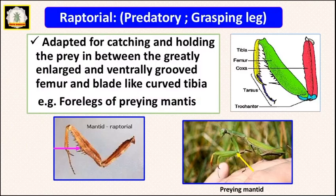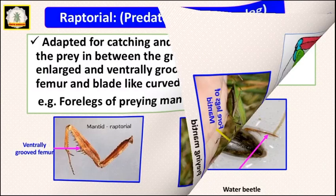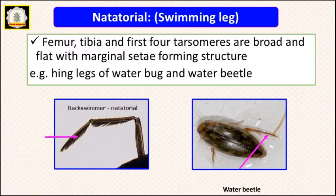Next is raptorial or predatory or grasping legs. In this type, the femur is long with grooves ventrally and is enlarged, whereas the tibia is curved and blade-like. For example, in praying mantis, the forelegs are used for praying and grasping purpose.